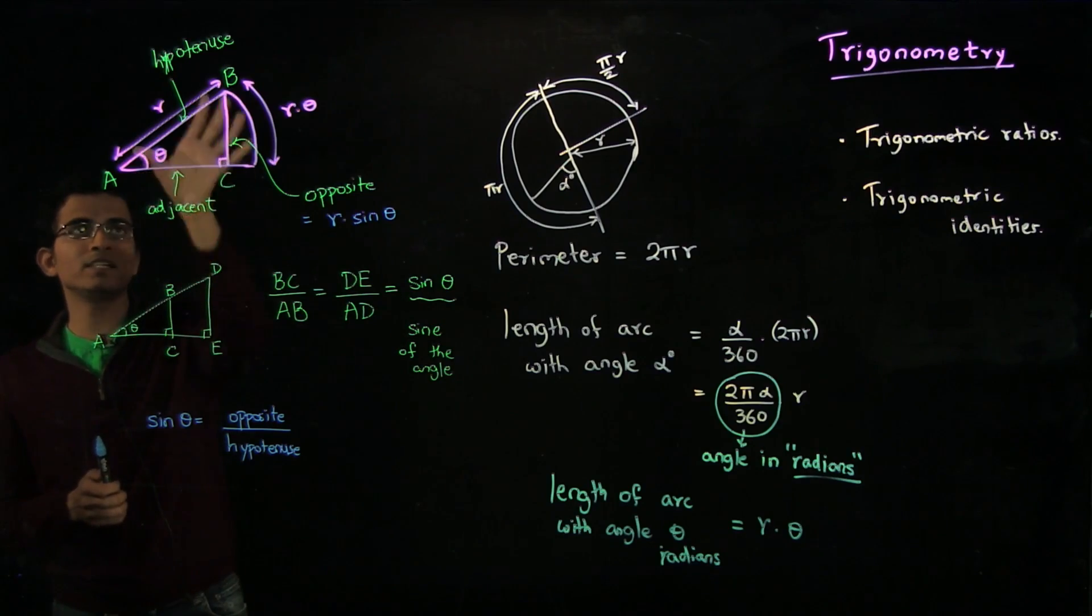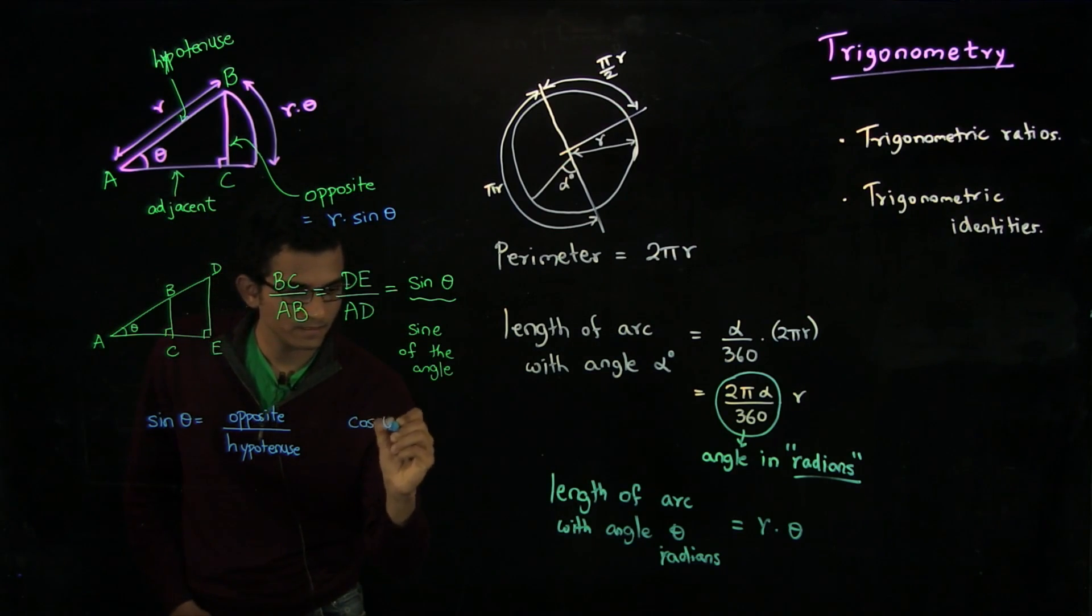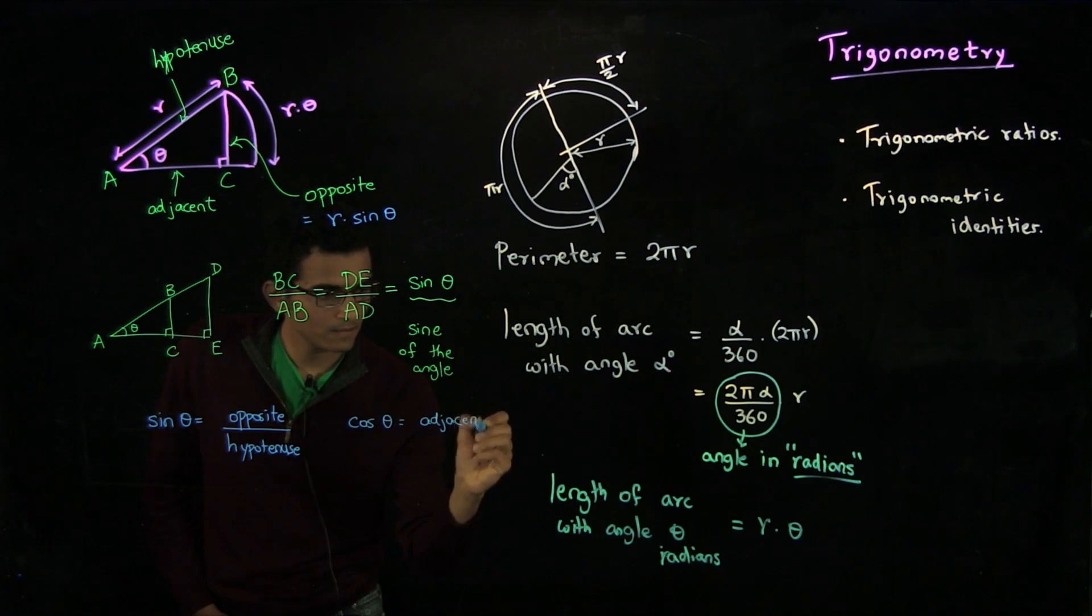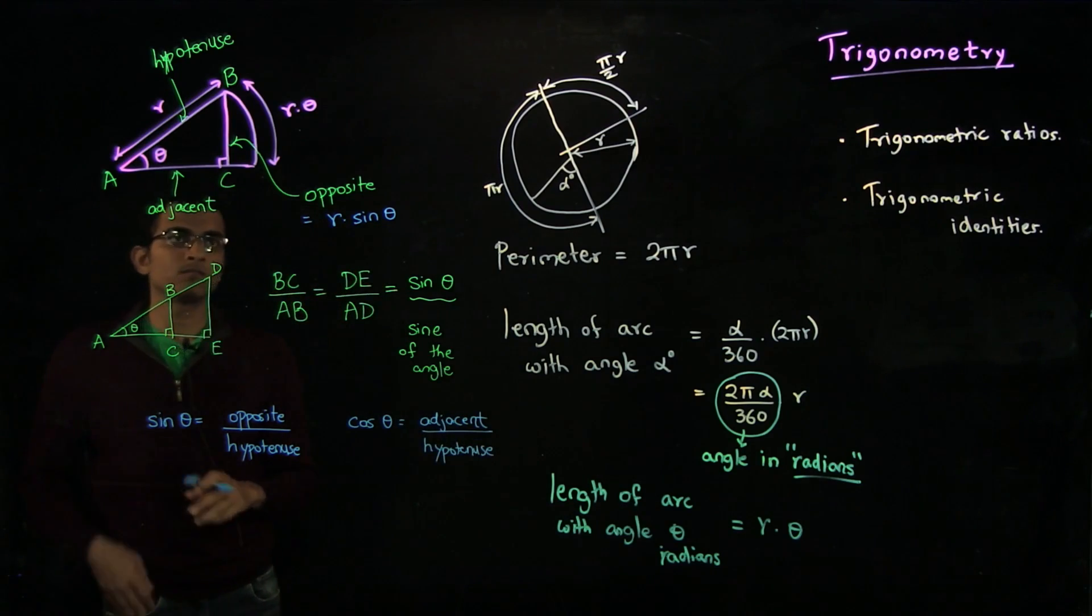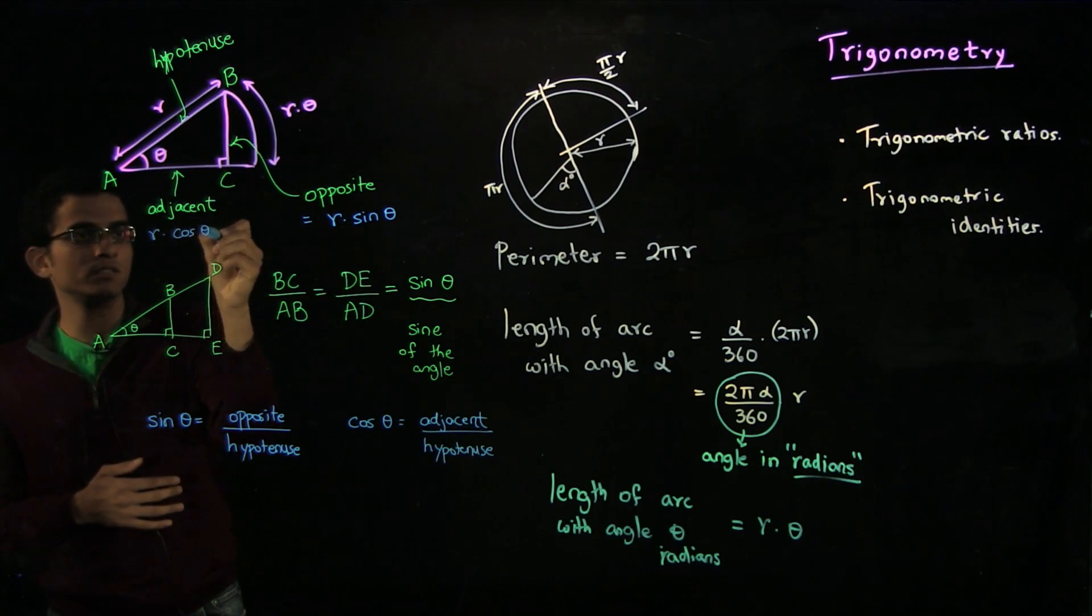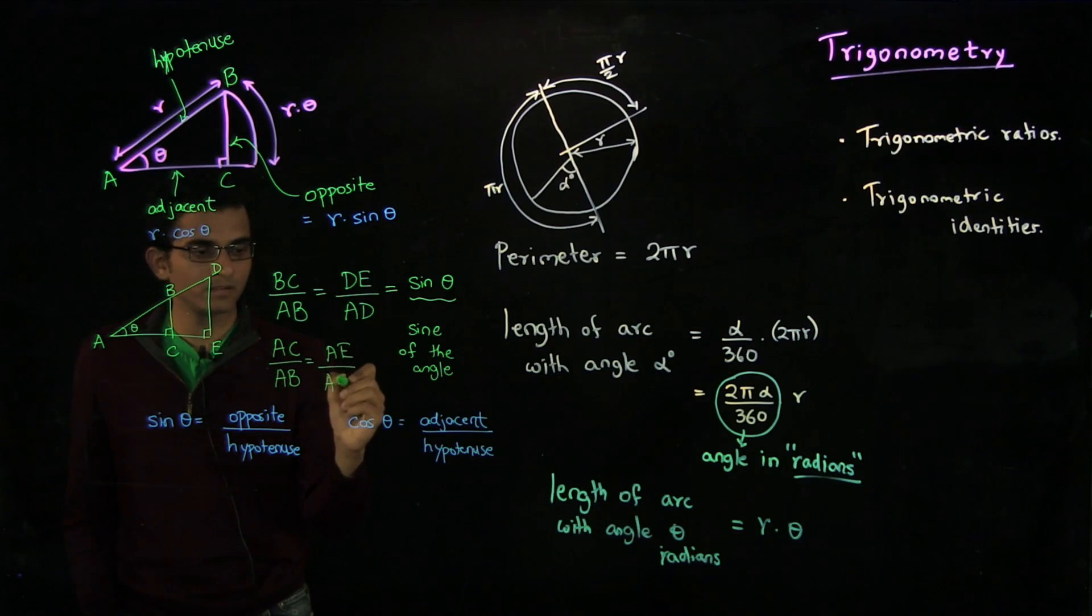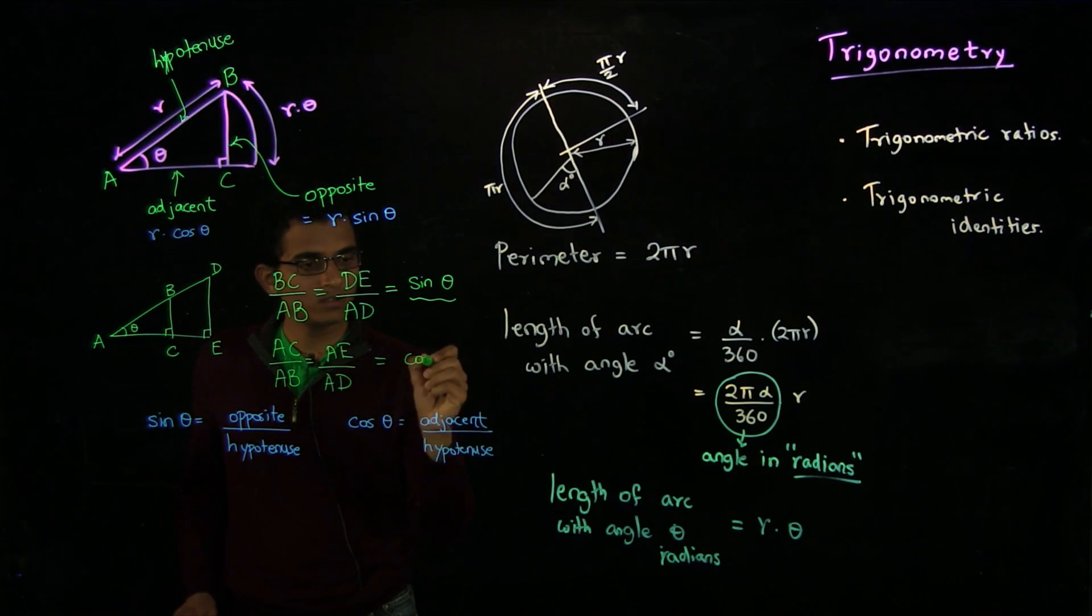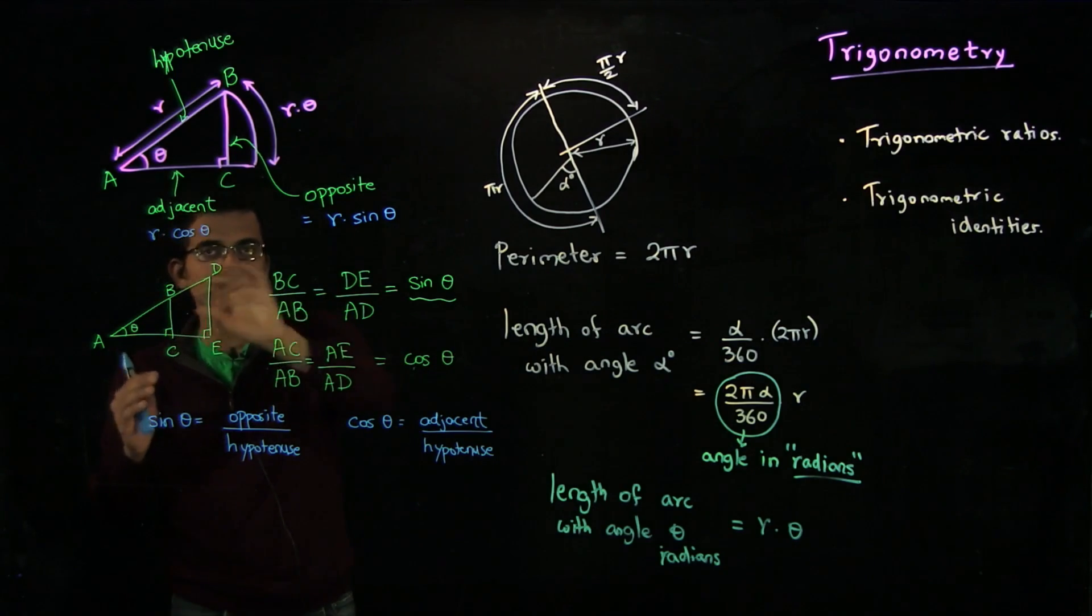Similarly, now we can define the ratio of the adjacent upon the hypotenuse. That is defined as cos theta. Now, the adjacent side, since the hypotenuse is of length r, this thing is of length r times cos theta. In terms of this ratio, it will be A C divided by A B, which is also same as A E divided by A D. This is the cos of the angle. And by similarity of triangles, this is just a property of the angle and does not depend on the sides of the triangle.